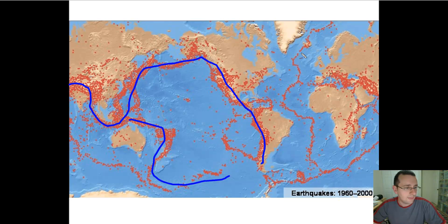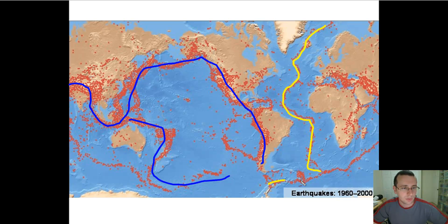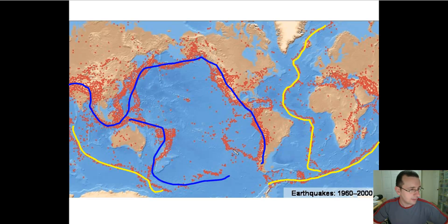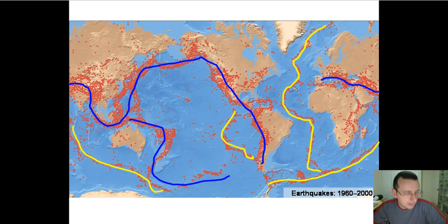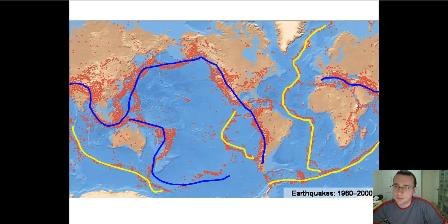You also have earthquakes caused by divergent boundaries, such as those at the Mid-Ocean Ridge, which causes Iceland. There are rift zones and divergent boundaries — the Indian divergent boundary, the Nazca plate divergent boundary, and some more convergent earthquakes in Europe. These are correlated with the Ring of Fire or the Great Mountain Belts of the world, while divergent boundaries are correlated with the rift zones.